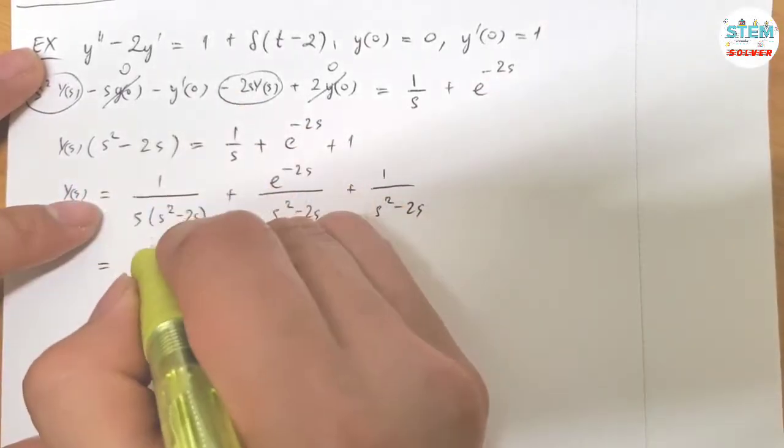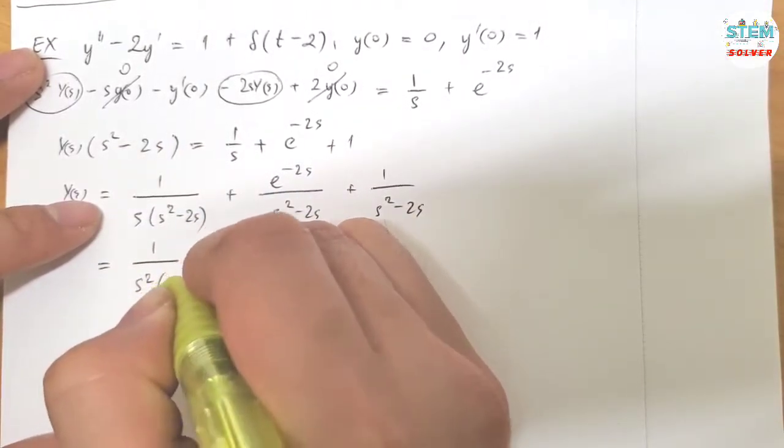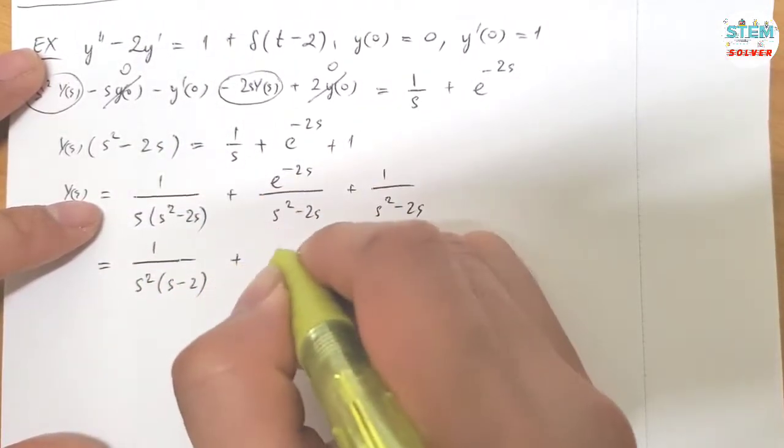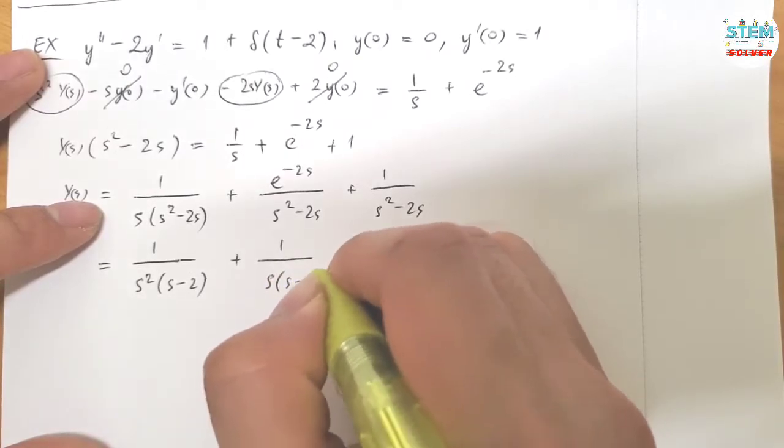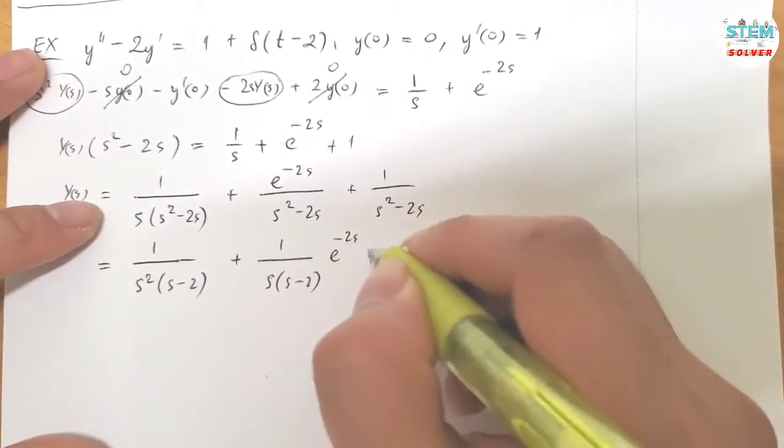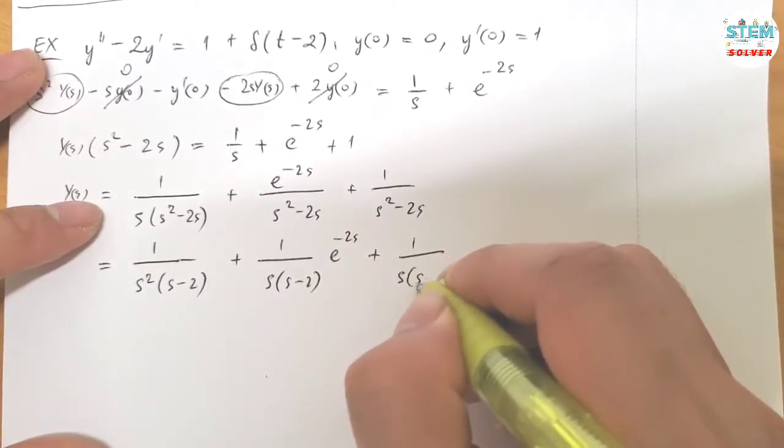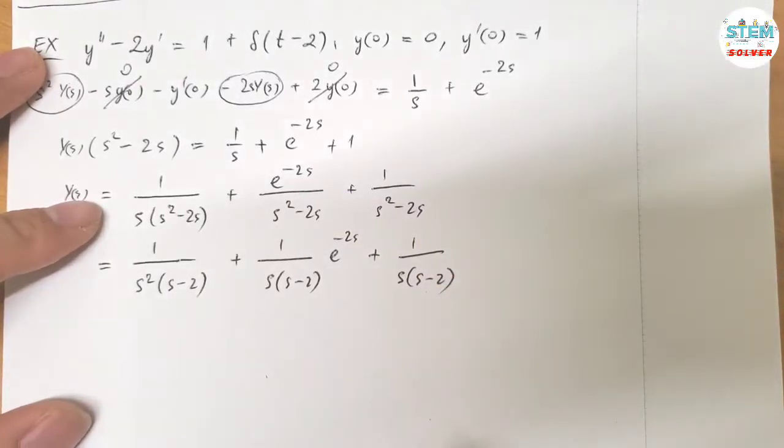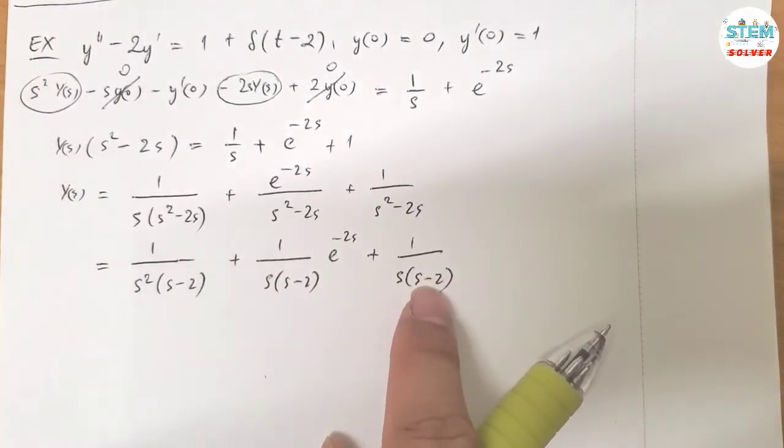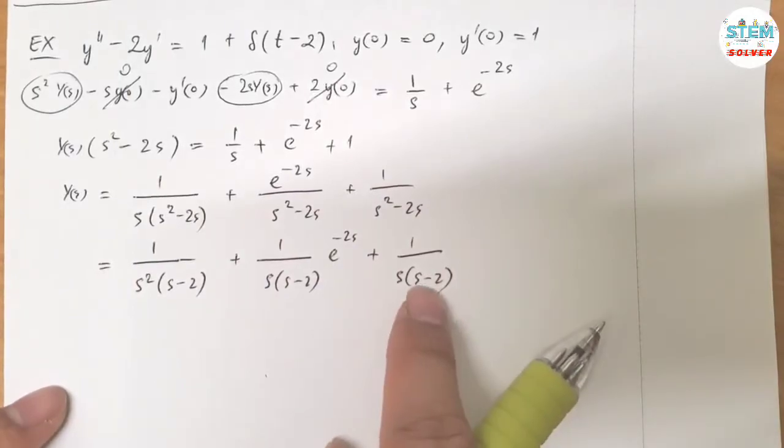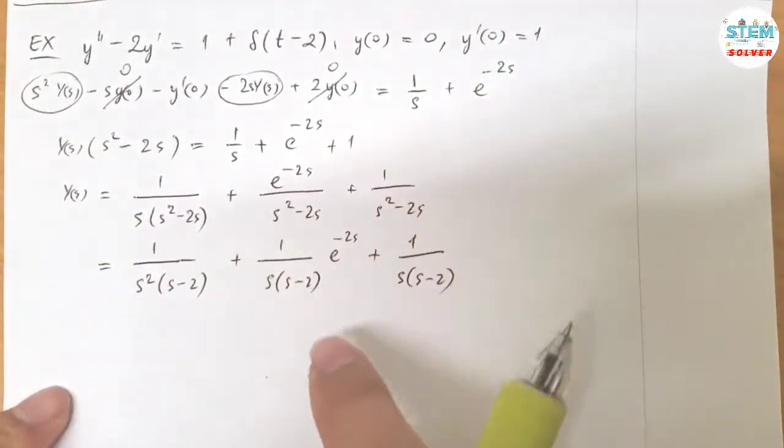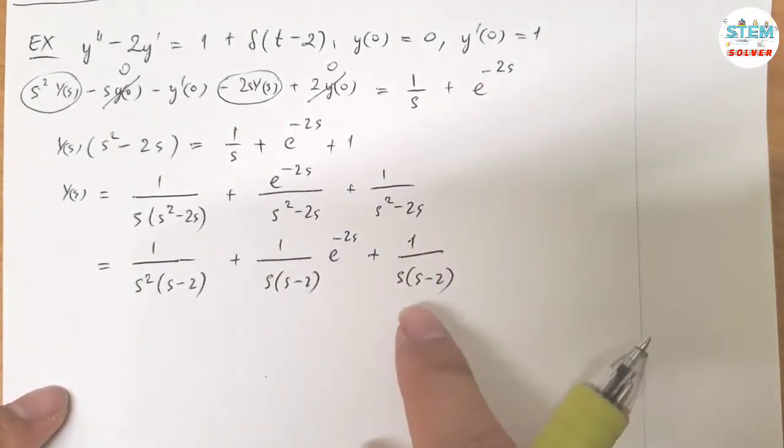Factor out the S, I have 1 over S squared times S minus 2 plus 1 over S times S minus 2. So these are, we are good for these because we can find this Laplace transform easily with my method.